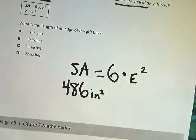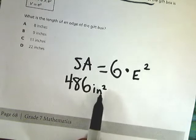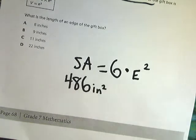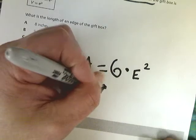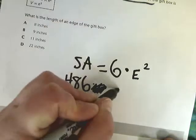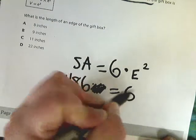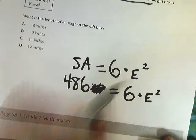But remember, that inch squared is not on the number, it's on the unit. Inches is squared, not 486. So don't do something weird. I'm just going to get rid of that for right now so we don't look at it and think about it. Then 6 times e squared.